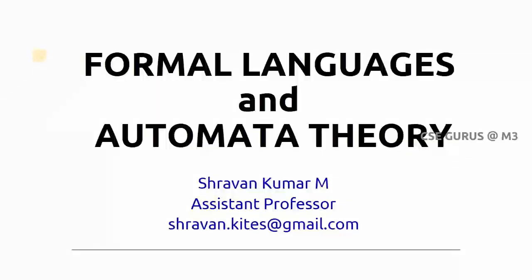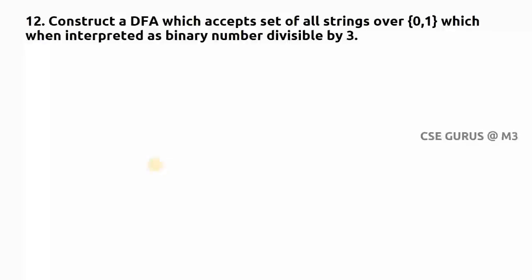Welcome to the class of Formal Language and Automata Theory. Question 12: construct a DFA which accepts the set of all strings over {0,1} which, when interpreted as a binary number, is divisible by 3. Numbers divisible by 3 are 0, 3, 6, 9, 12, etc. Converting to binary: 0 is 0, 3 is 11, 6 is 110, 9 is 1001, 12 is 1100.